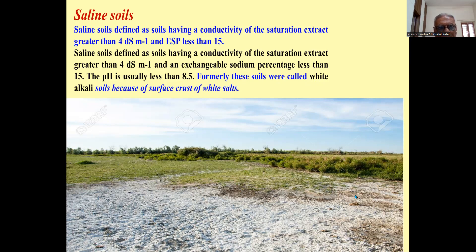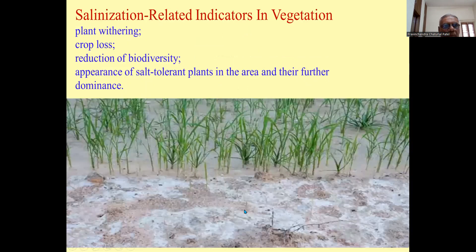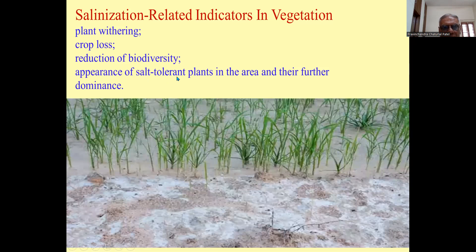You can find white salt on the surface. Salinization-related indicators in vegetation include plant withering, crop loss, reduction of biodiversity, appearance of salt-tolerant plants in the area and their further dominance. You can see white patches and very poor plant growth.